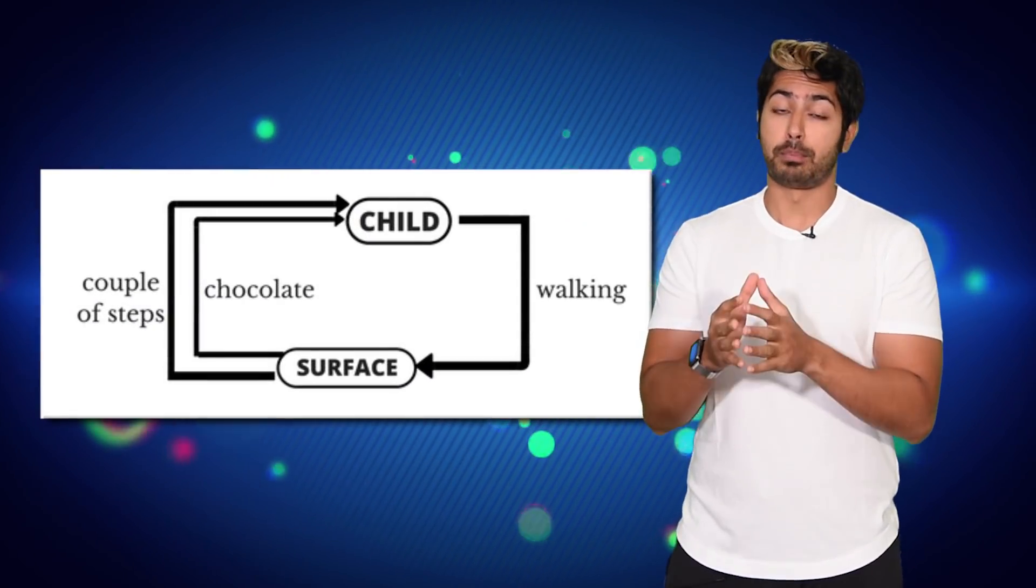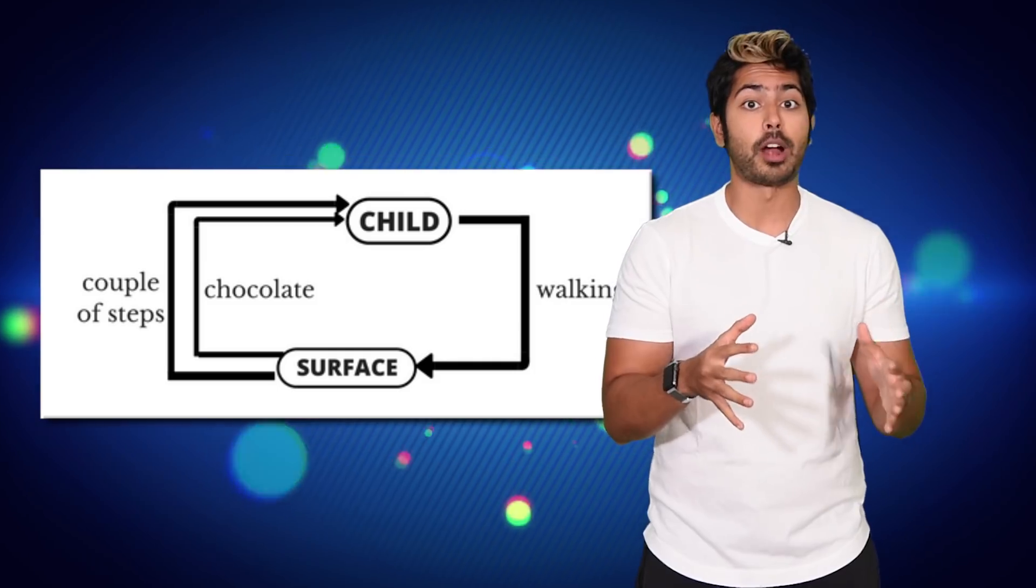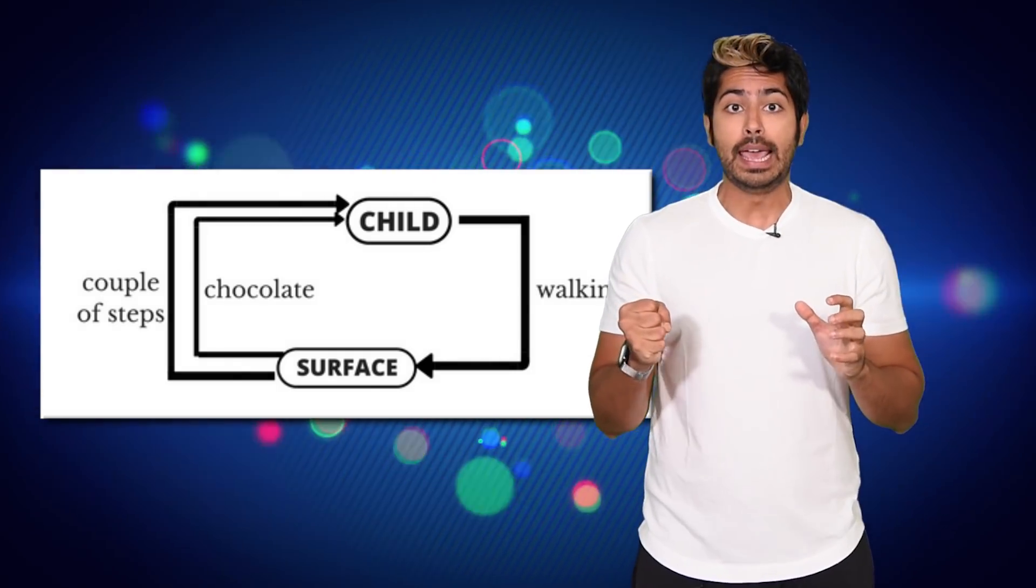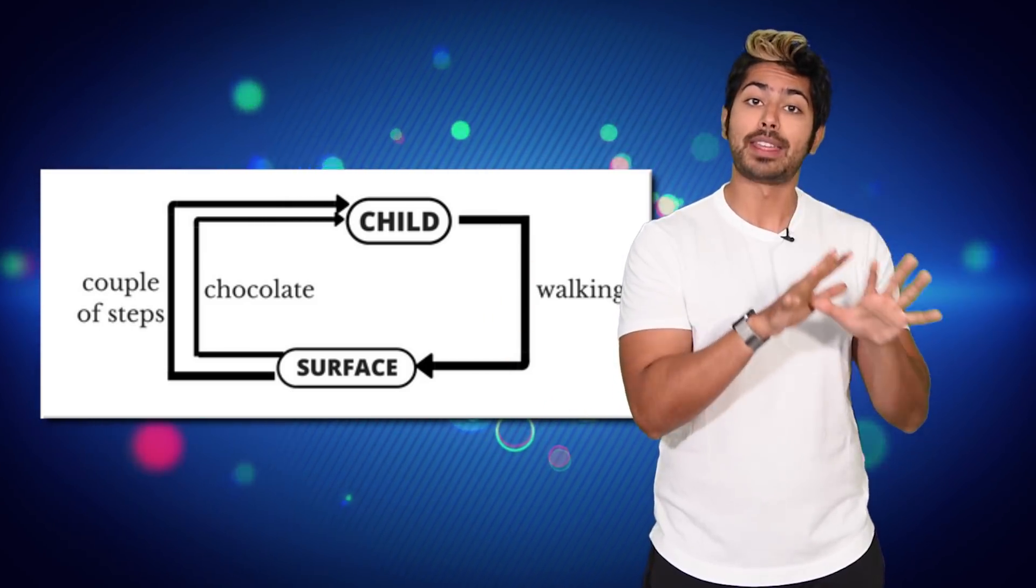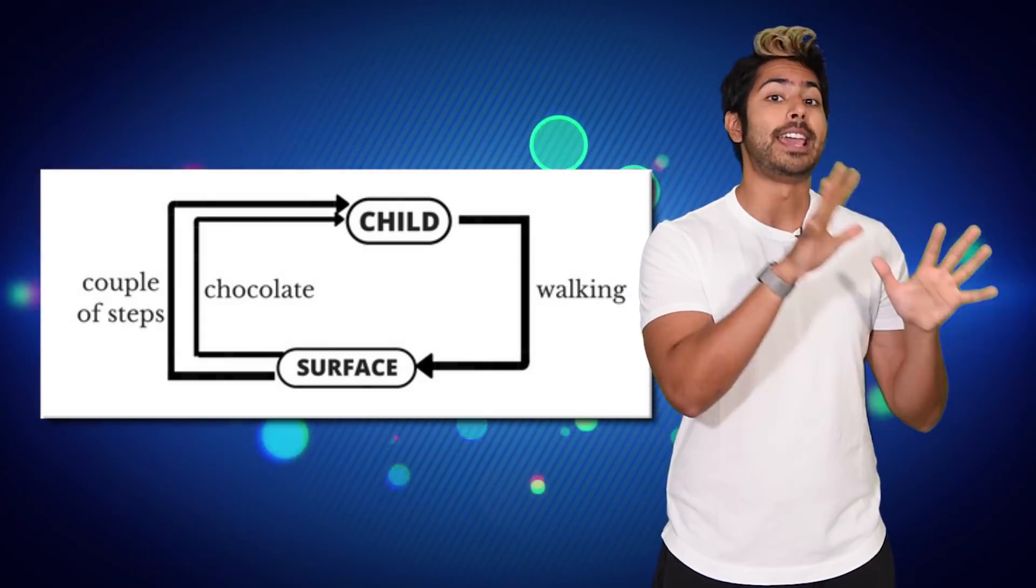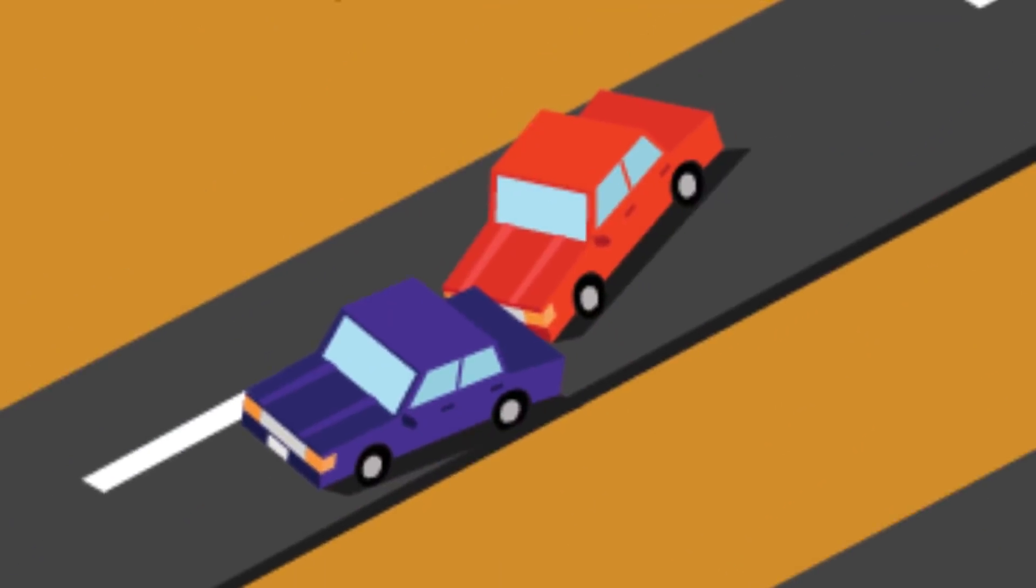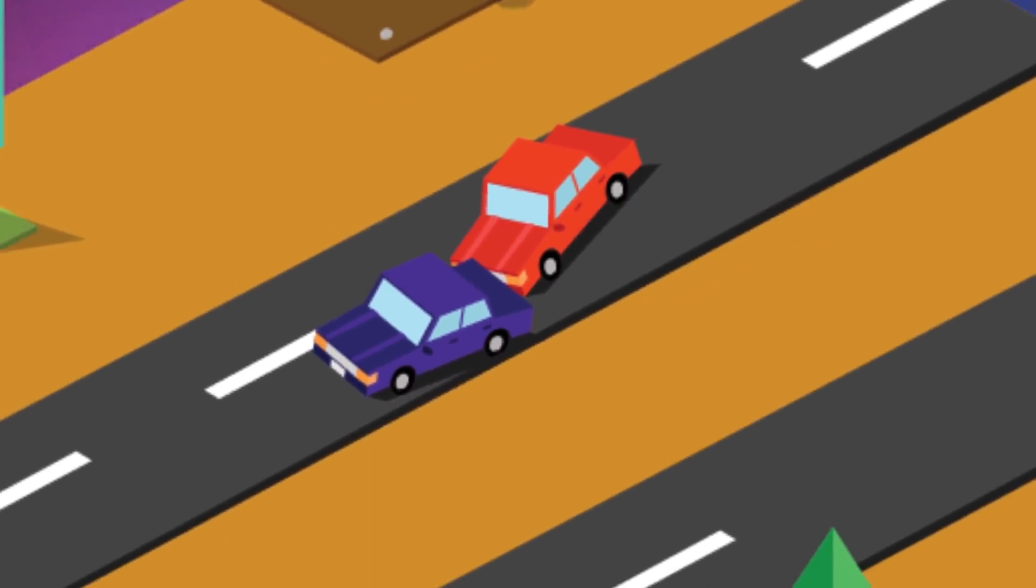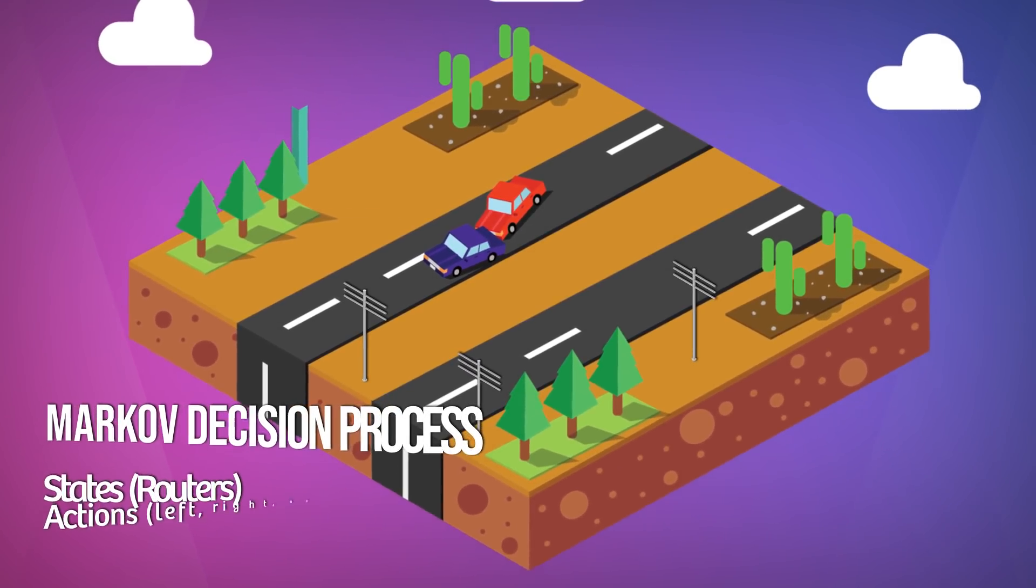RL aims to solve the problem of learning in an environment through trial and error where time is a dimension. And the most common way to frame this problem is to use the mathematical framework known as a Markov decision process. Once we formally define our problem Markovian style in terms of states, actions, and rewards, we'll need to formally define our solution.